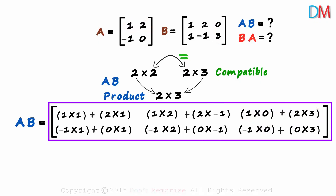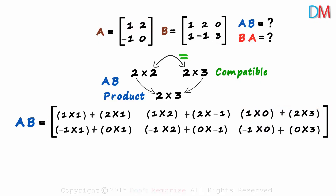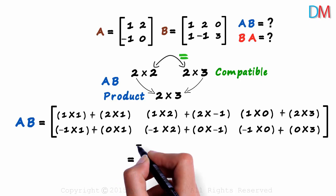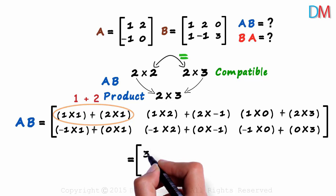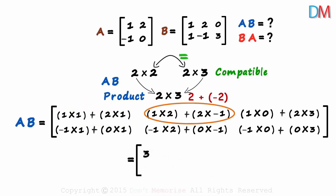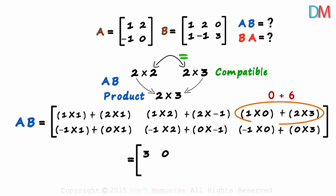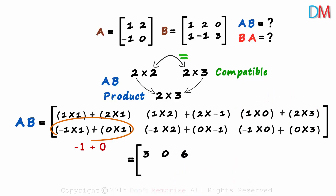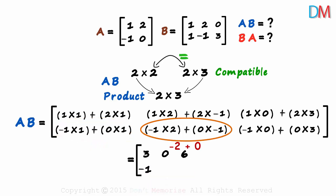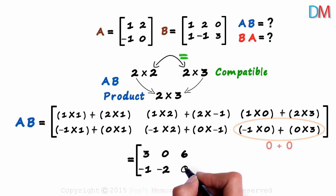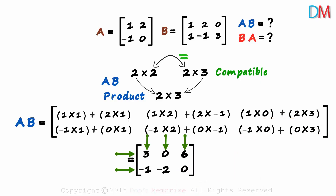This was the part we had to understand well; the rest is plain simple calculation. The product gives us: one plus two equals three; two plus minus two equals zero; zero plus six equals six; minus one plus zero equals minus one; minus two plus zero equals minus two; and zero plus zero equals zero. The result has two rows and three columns — order two by three, as expected from the first and fourth numbers.